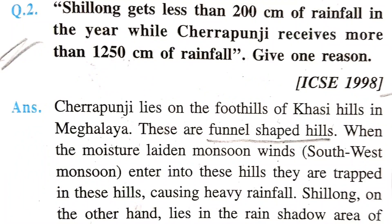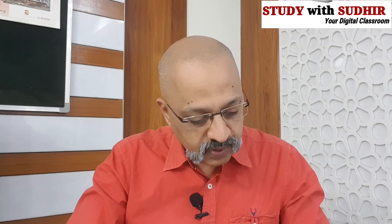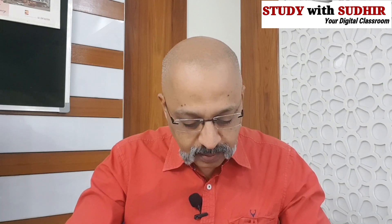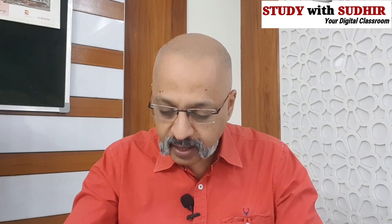Shillong gets less than 200 centimeters of rainfall. Why does Cherrapunji receive more than 1250 centimeters? — this came in ICSE 1998. Cherrapunji lies in the foothills of the Khasi hills in Meghalaya, which are funnel-shaped. When the moisture-laden southwest monsoon winds enter into these hills, they are trapped, causing heavy rainfall. Shillong, on the other hand, lies in the rain shadow area of the Khasi hills and gets less rainfall. Orographic rainfall was also asked as a question in 2011.